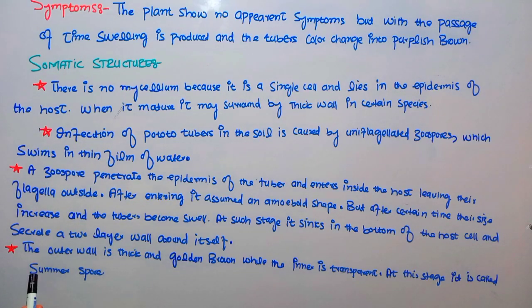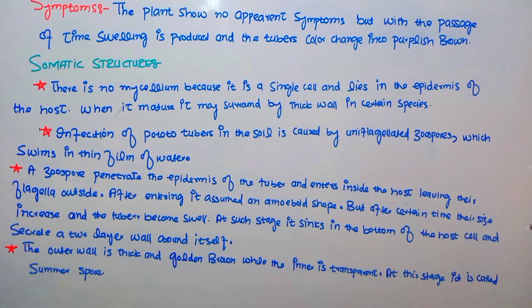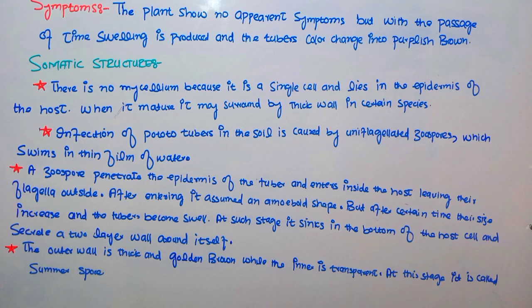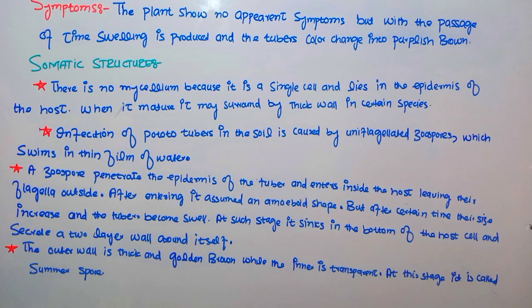At this stage it is called a summer spore. The summer spore will undergo division, and we will discuss the size and types of spores in the next video on Synchytrium endobioticum asexual reproduction, followed by sexual reproduction. I hope you understood today's lecture. If you have any confusion, comment in the comment section. Thank you so much for watching — Allah Hafiz.